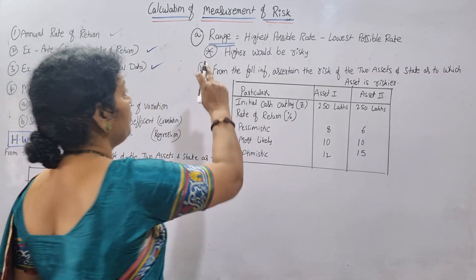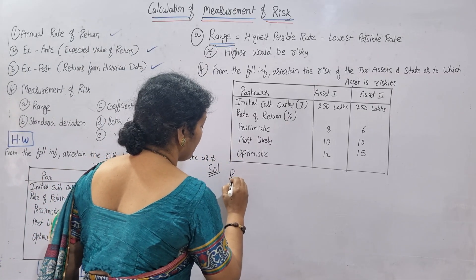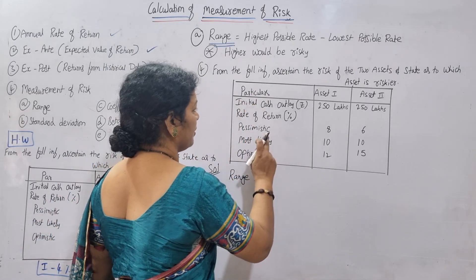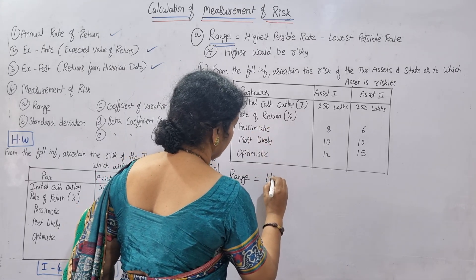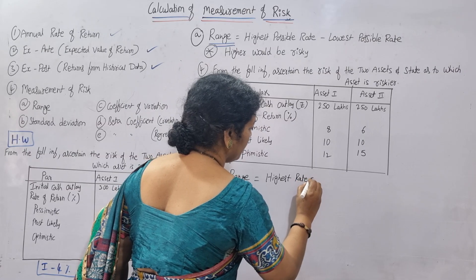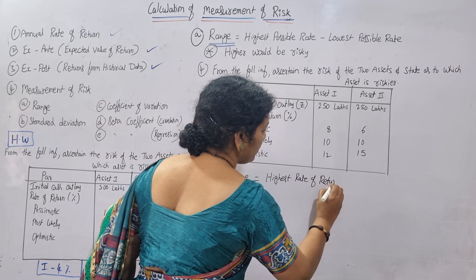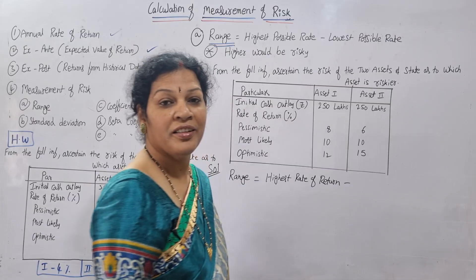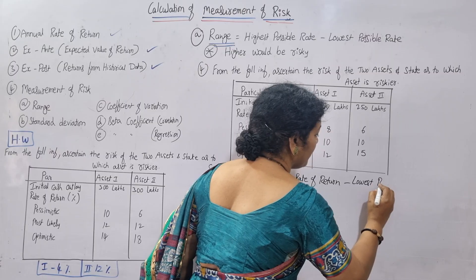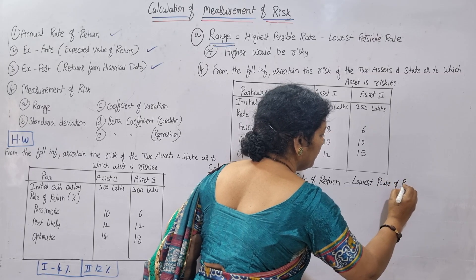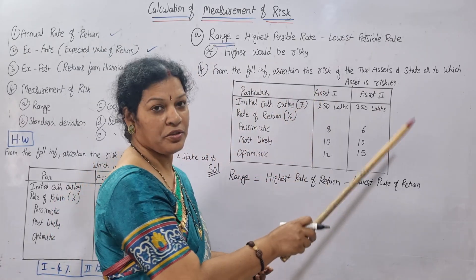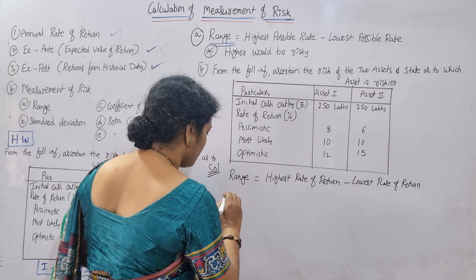For the solution, first write the formula. Range equals highest possible rate of return minus lowest rate of return. We will calculate this for both assets — Asset 1 first, then Asset 2.